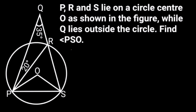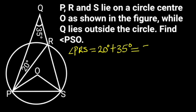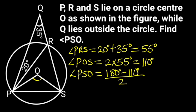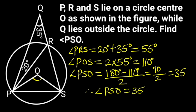P, R, and S lie on a circle center O, while Q lies outside the circle. Find angle PSO. Solution: In the diagram, angle PRS equals 20 degrees plus 35 degrees, which equals 55 degrees. Reason: Exterior angle of triangle. Obtuse angle POS equals 2 times 55 degrees, which is 110 degrees. Reason: Angle at the center is twice the angle at the circumference. Angle PSO equals (180 degrees minus 110 degrees) over 2, which is 35 degrees.